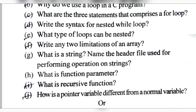What is a function parameter? A function parameter is the input which we pass through a function. What is a recursive function? When a function calls itself to do some tasks, it is called a recursive function. How is a pointer variable different from a normal variable? A normal variable contains a value, but a pointer variable contains the memory location of another variable.